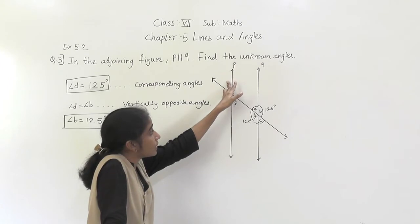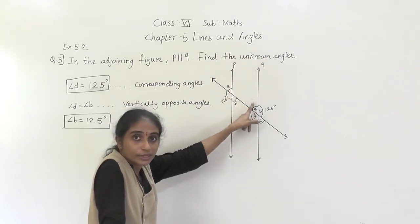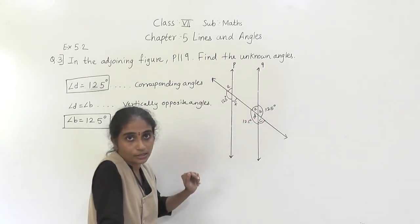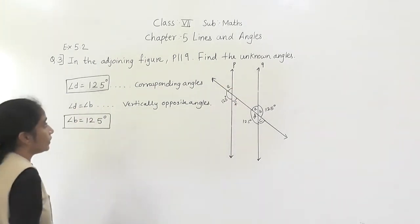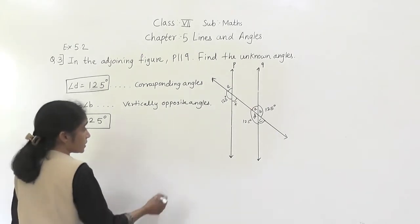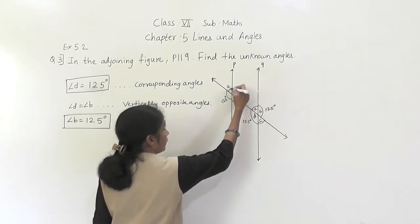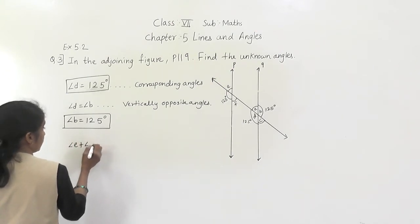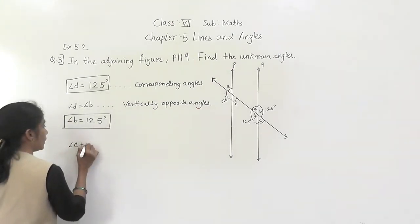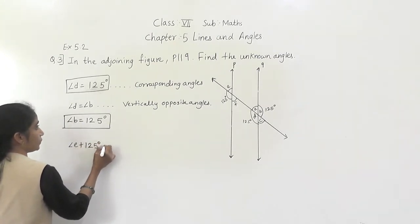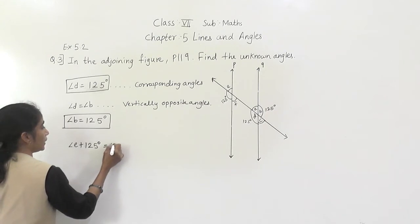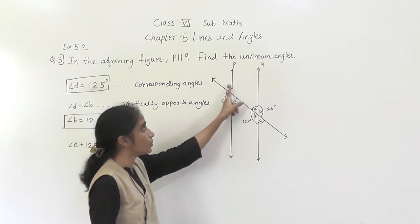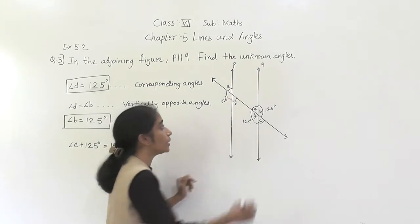You can find this angle E also. Angle E plus 125 degrees is equal to 180 degrees. Why? Because they form a linear pair. This is line P, and this is the transversal. They have formed a linear pair, and linear pair means its measurement is 180 degrees.